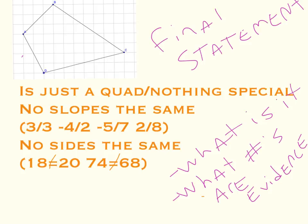So, we put our final statement. And our final statement says, what is the shape? And what numbers are our evidence? So, this is just a quadrilateral. It's nothing special. Because no slopes are the same. Write down the slopes. And no sides are the same. Write down the sides.